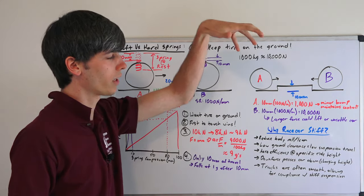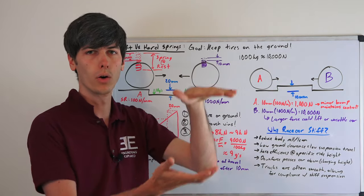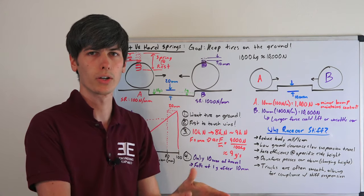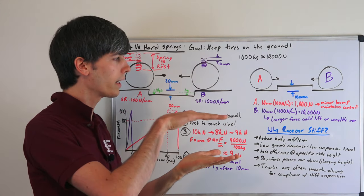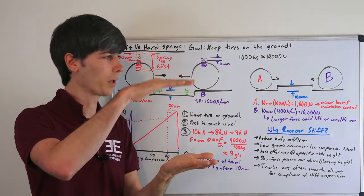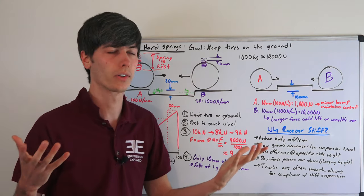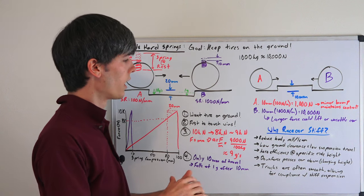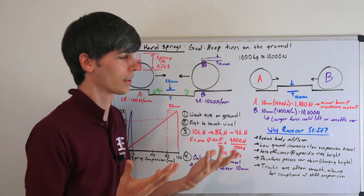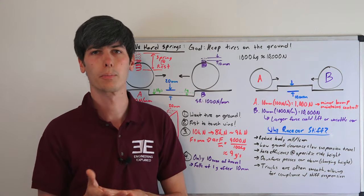Same goes for downforce. So you're going to have downforce pressing down on that car. You don't want it to actually press down too much. You want it to stay at a relatively similar ride height. And so by using stiffer springs, it won't press down as much. And then also driving on tracks, tracks are often smooth. Not all of them granted, but tracks are often smooth. And so this allows for compliance with very stiff suspensions.